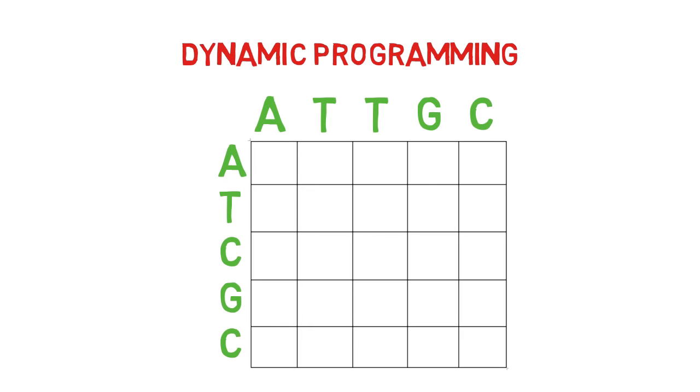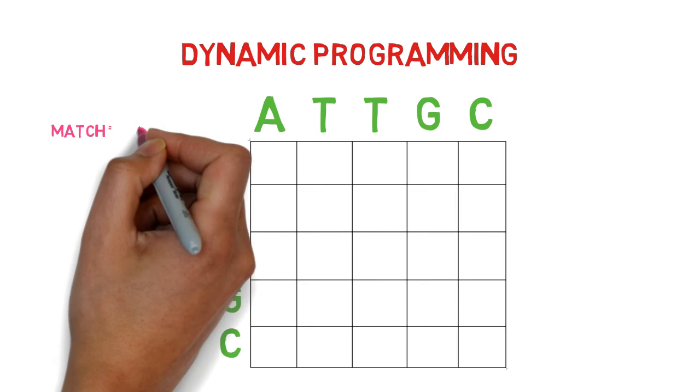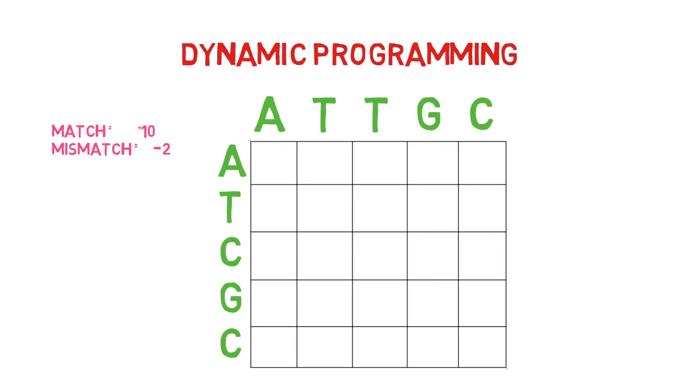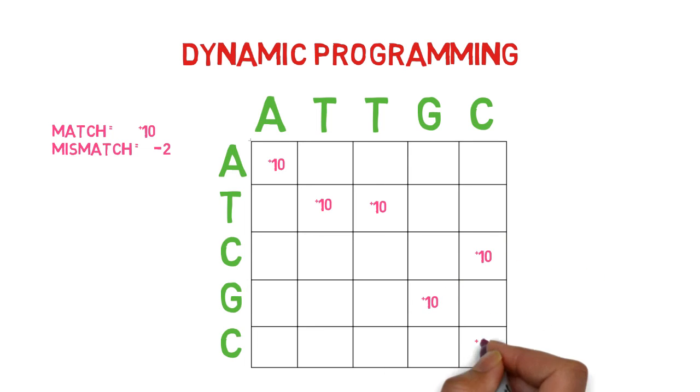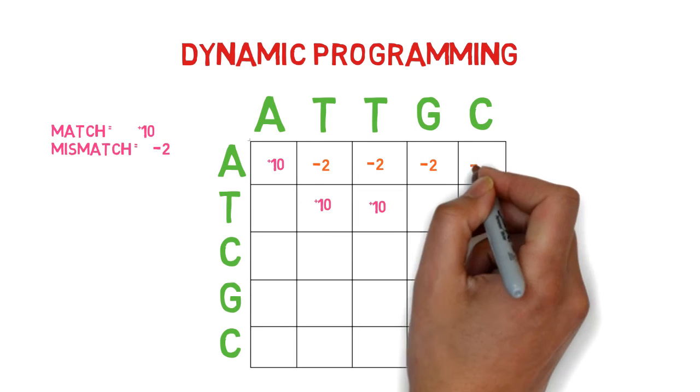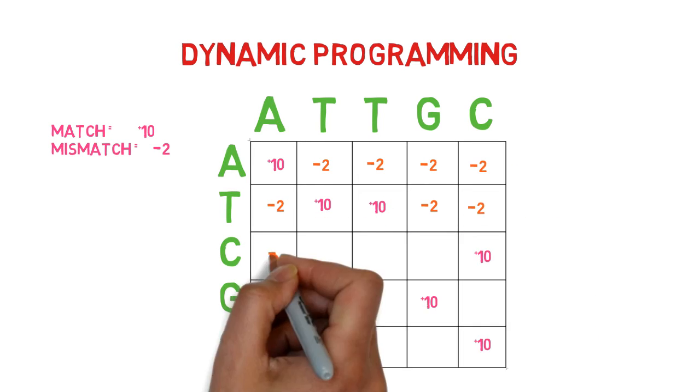Consider the following example. Every match is worth 10 points, and every mismatch penalty is worth minus 2 points. So, for each match in the table, add 10 points, and for each mismatch, subtract 2 points.